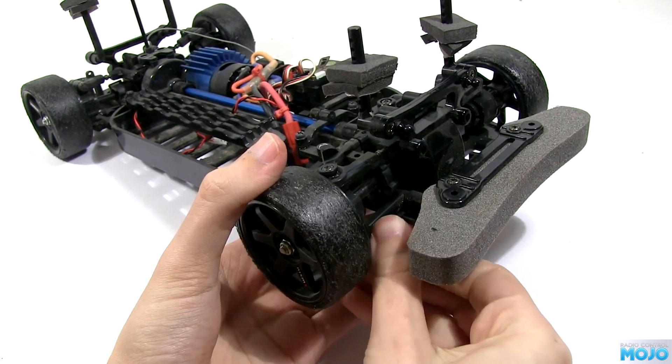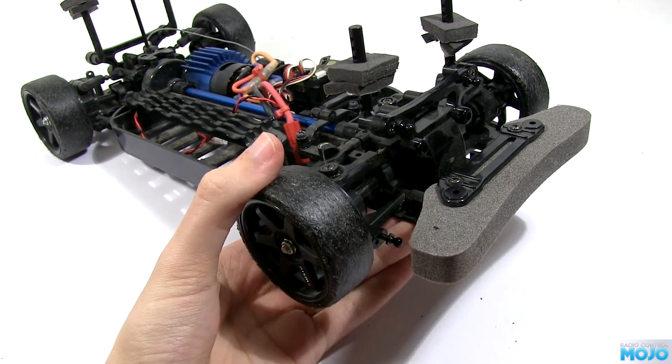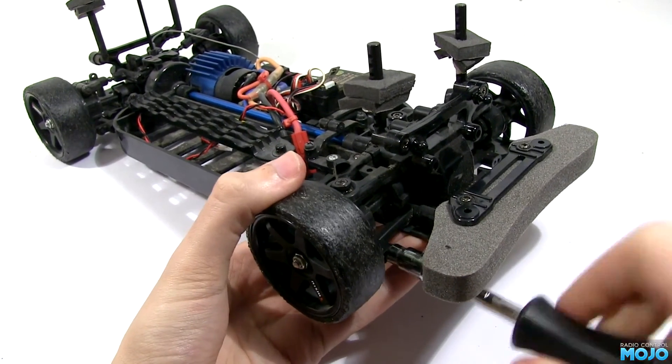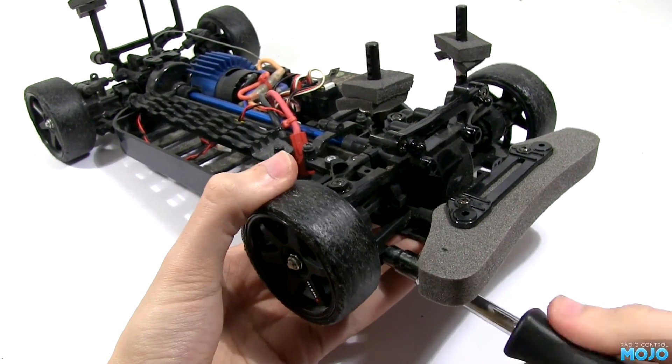If you keep the stock dampers, keep them together. I'm using the inner hole on the lower arms as it gives a little more ground clearance than the outer. That makes all the difference if you run outside.